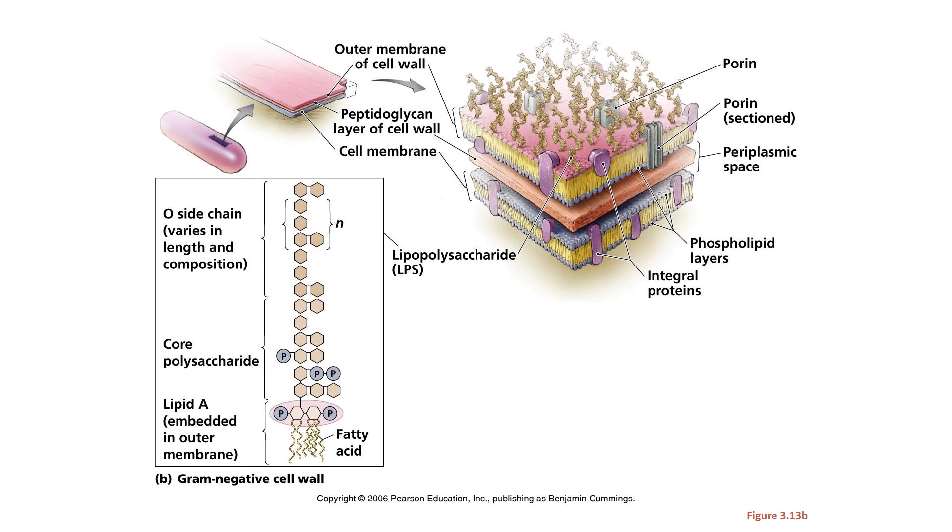Because of the structure of the cell envelope of gram-negative bacteria, gram-negative bacteria decolorize and end up the color of the secondary stain in the gram stain. For more information on that, please listen to my Tiny Teach about the gram stain.